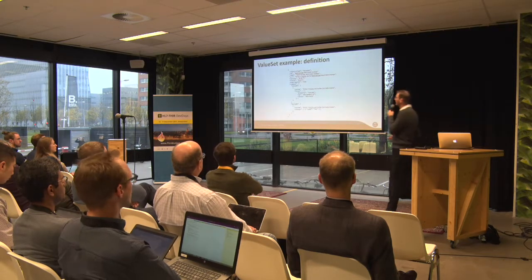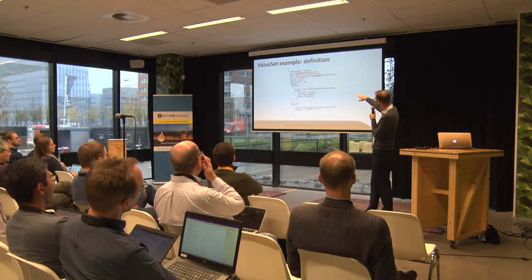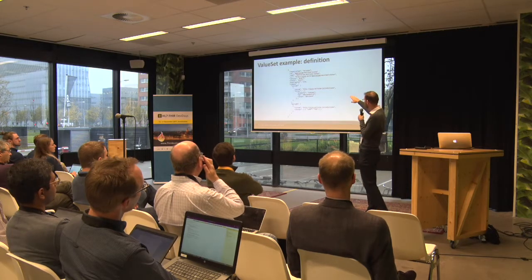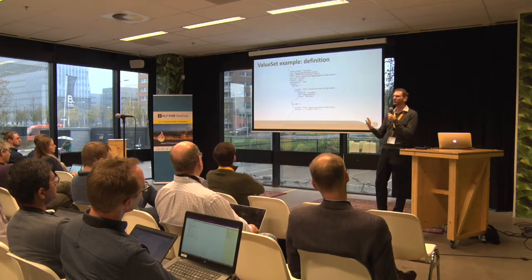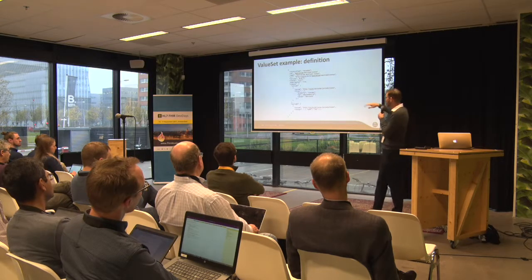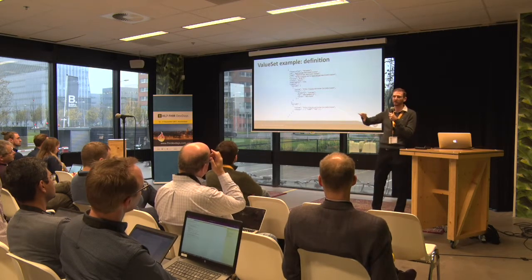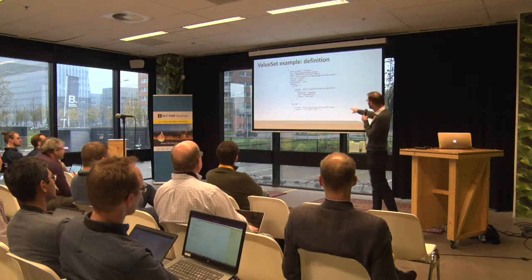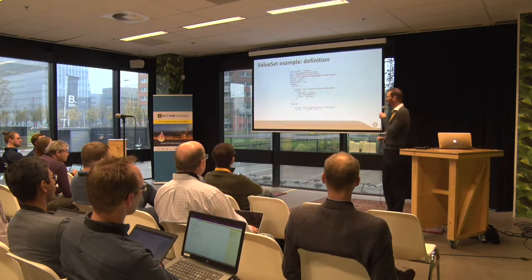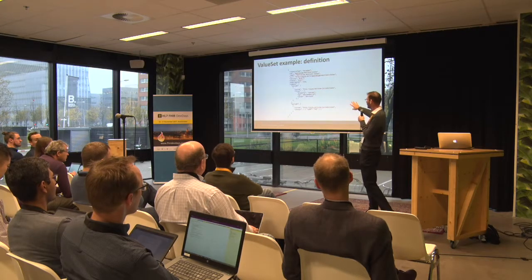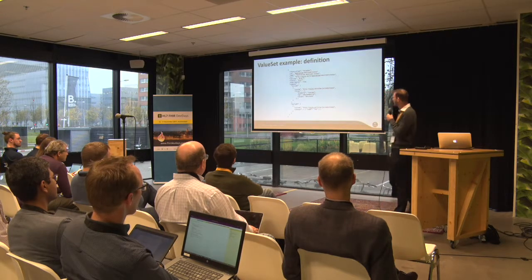Here's a simple example: I've defined a value set of mainland Australian states. I've got an include that says I want all concepts from the AU jurisdictions where the concept is a descendant of AU-state. I'm using descendant-of rather than is-a because is-a would also include AU-state itself. Then I'm going to exclude Tasmania, because I'm only interested in mainland states, and excludes get processed last.